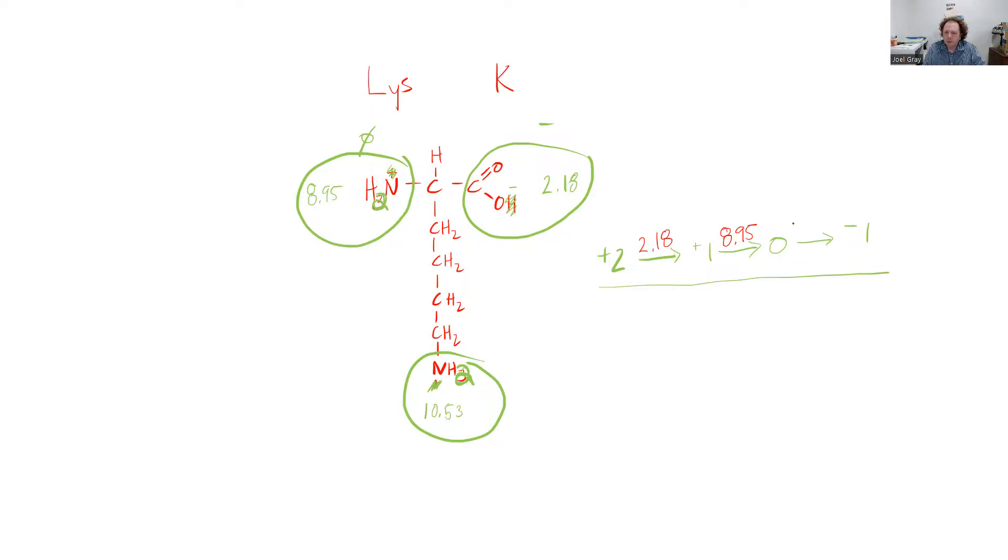So my last pKa to write is 10.53, which indicates my transition from the 0 to the -1.